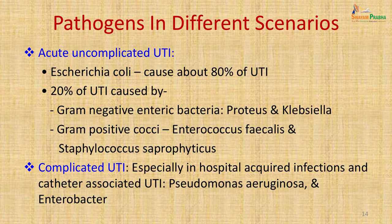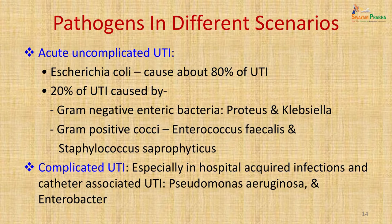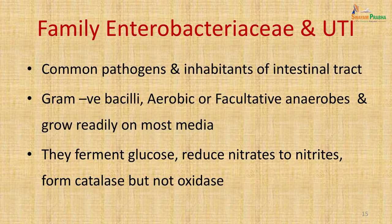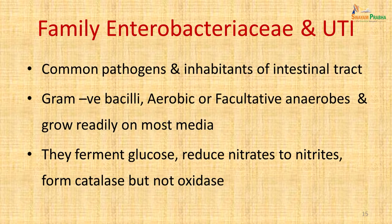Complicated UTI, especially hospital-acquired and catheter-associated UTI (CAUTI), commonly involves Pseudomonas aeruginosa and Enterobacter, which are not commonly seen in acute uncomplicated UTI. The majority of bacteria causing urinary tract infection belong to the family Enterobacteriaceae — they are gram-negative bacilli, aerobes and facultative anaerobes, and they grow readily on most common media. They can be recognized by their characteristic biochemical reactions.